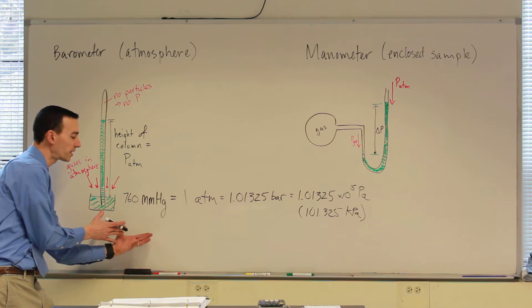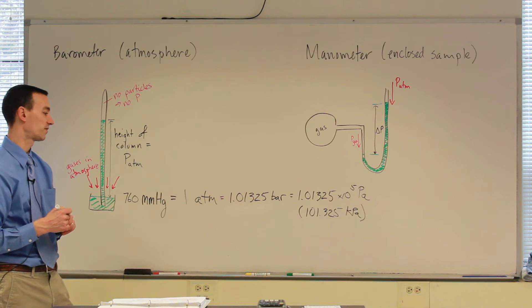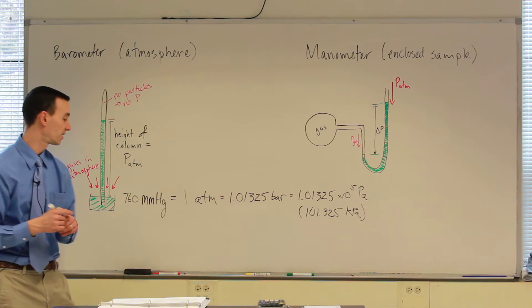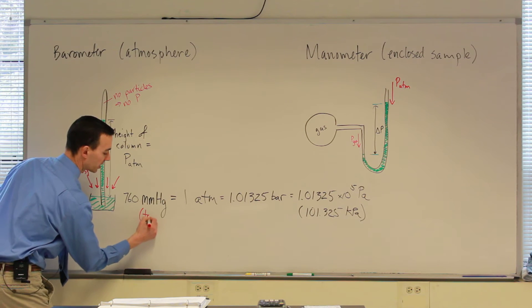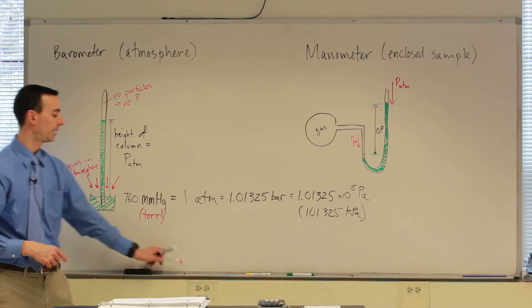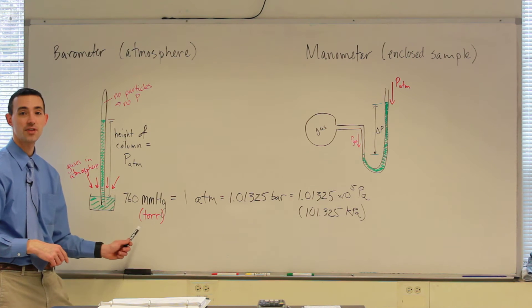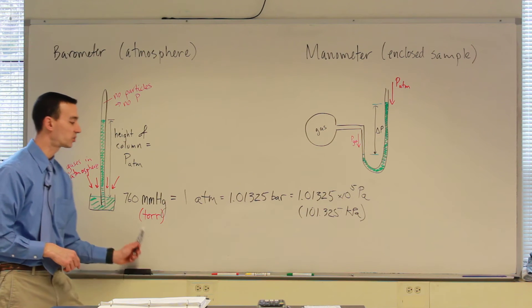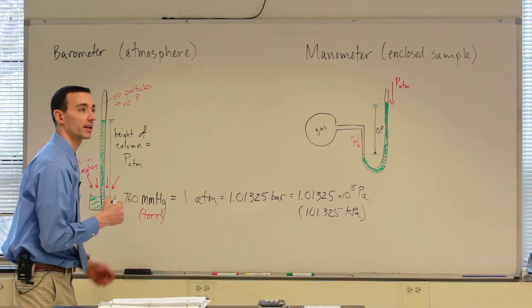So these now are relationships that you can use to convert pressures. Typically we would measure things in millimeters of mercury, but then maybe convert over to atmospheres. That'll be the most common conversion that you do. Nowadays, in his honor, in honor of a scientist, Torricelli, we've actually renamed the millimeter of mercury into the torr. So they're the same thing. So 760 torr are equal to one atmosphere.